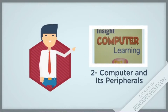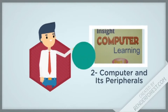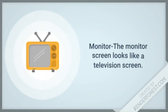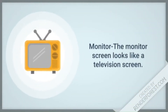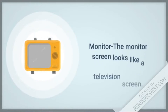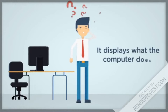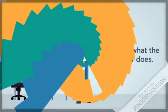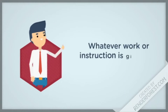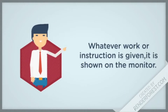Chapter 2: Computer and its Peripherals. The monitor screen looks like a television screen. It displays what the computer does. Whatever work or instruction is given, it is shown on the monitor.